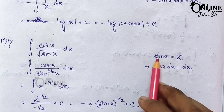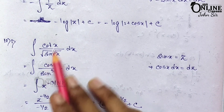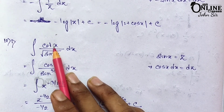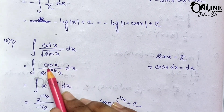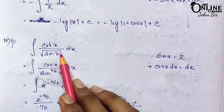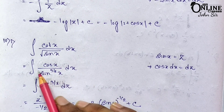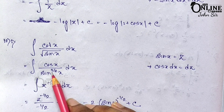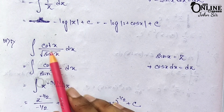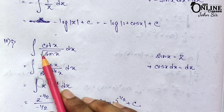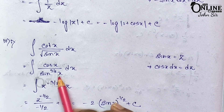Problem 10.1: ∫cot x / √sin x dx. Let sin x = z, so cos x dx = dz. Writing cot x = cos x/sin x, and √sin x = sin^(1/2)x, the denominator becomes sin x · sin^(1/2)x = sin^(3/2)x. So the integral becomes ∫cos x / sin^(3/2)x dx = ∫z^(−3/2) dz.